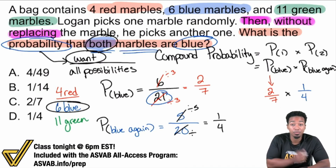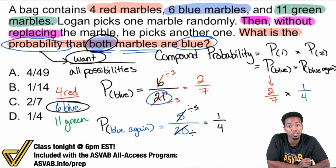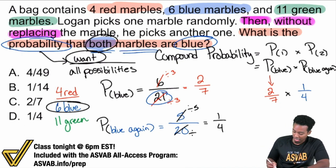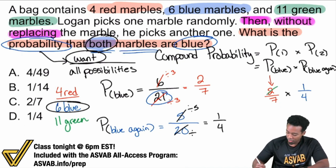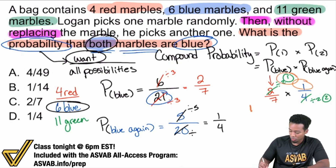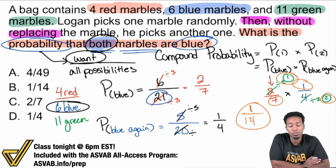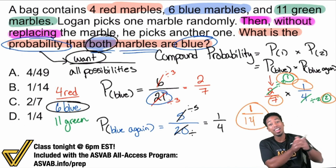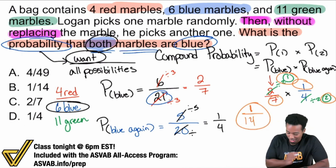You could simplify before you actually multiply these fractions — I always suggest that. Taking a look, you can see that two and four are both divisible by two, giving us one over two here. So when we finally perform the multiplication, we have one times one which is one, and seven times two which is 14. Our answer: the chances that we pick a blue and then blue again without replacing the marble is one out of 14.